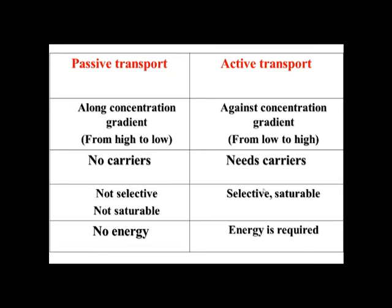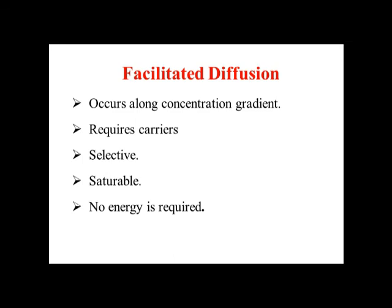Passive diffusion is the most common drug absorption route; active transport is rare. The key differences: passive goes from high to low concentration, requires no carrier or energy, and is non-selective and non-saturable, whereas active transport goes from low to high, requires a carrier and energy, and is selective and saturable.